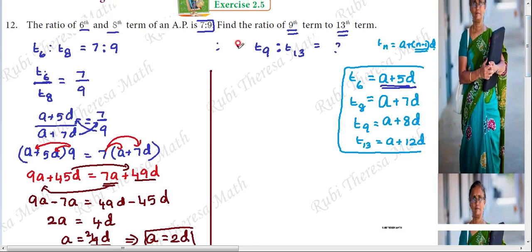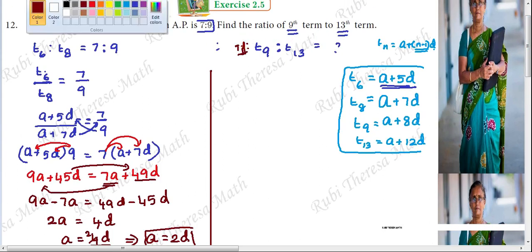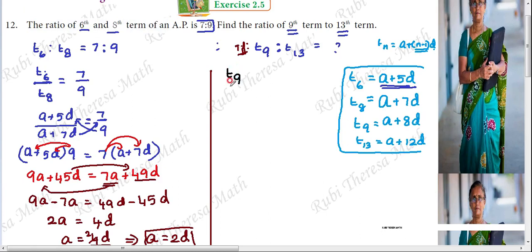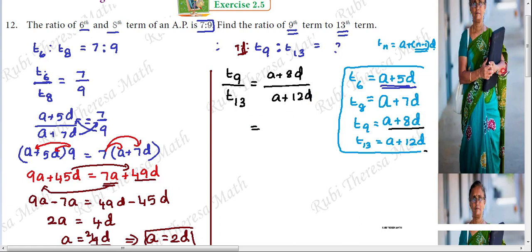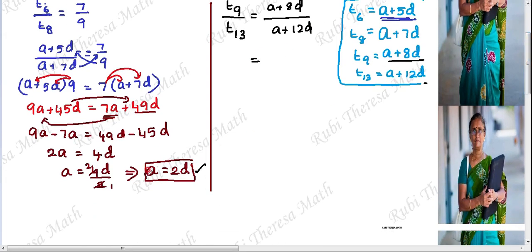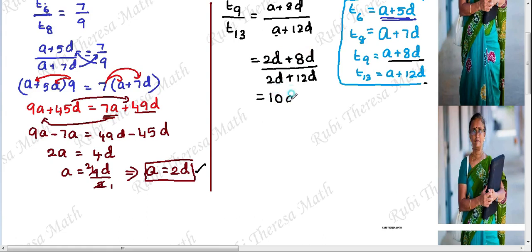We found a equals 2d. Now substitute to find T9 to T13. T9 equals a plus 8d, and T13 equals a plus 12d. Substituting a equals 2d: T9 equals 10d, T13 equals 14d. So T9 by T13 equals 10d by 14d.